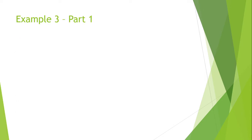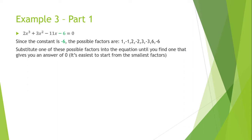So for the last example, I've split it into two parts. There's the equation. It's a third degree polynomial equation. Since the constant is minus 6, we have the possible factors: 1, minus 1, 2, minus 2, 3, minus 3, 6, and minus 6. Substitute one of these possible factors into the equation until you find one that gives you an answer of 0. It's easiest to start from the smallest factors.